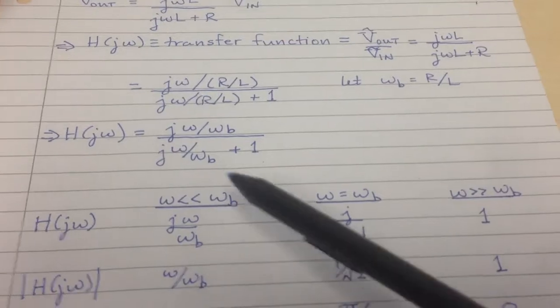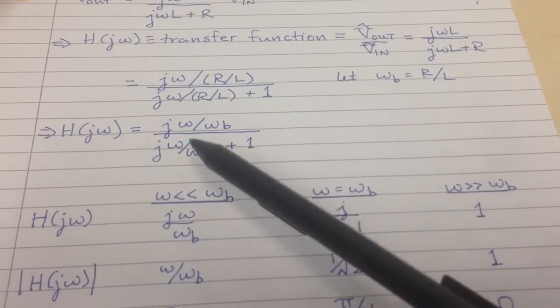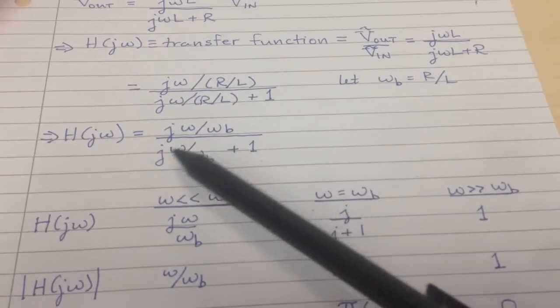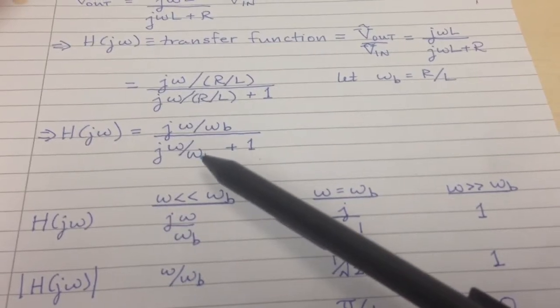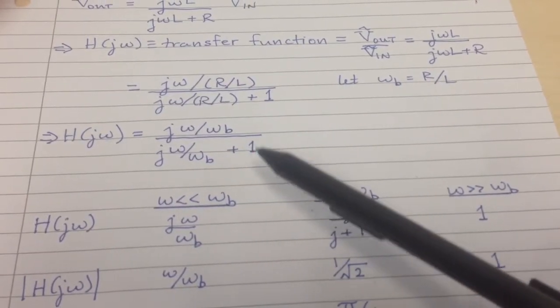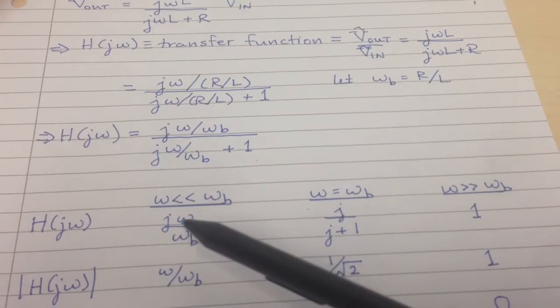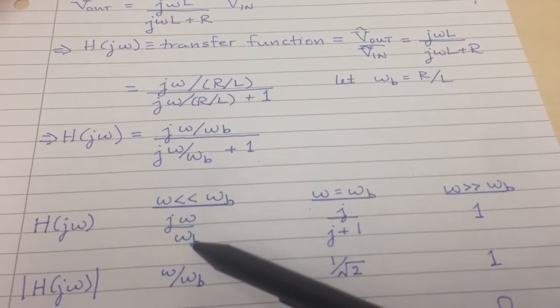When omega is small, this term doesn't play a major role here, because omega over omega B is very small. The denominator is going to look basically like 1, and we're just going to get the numerator, j omega over omega B.